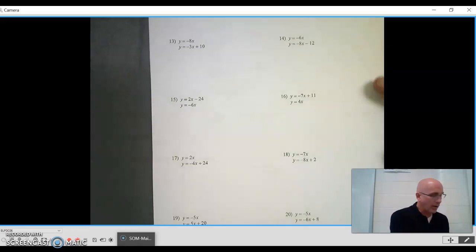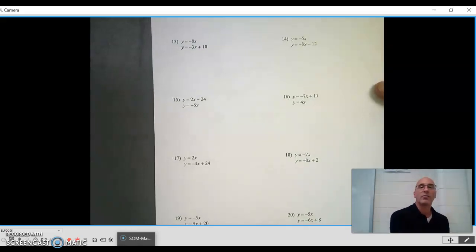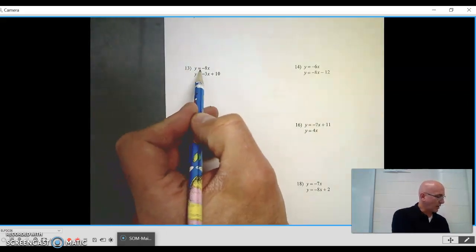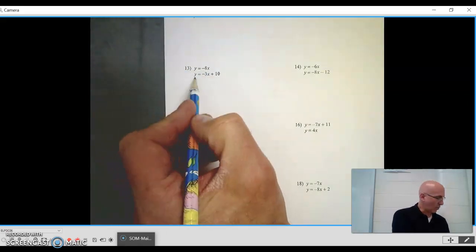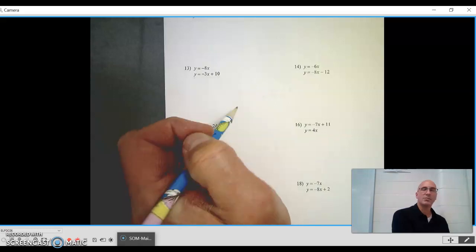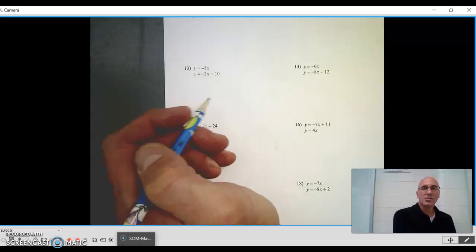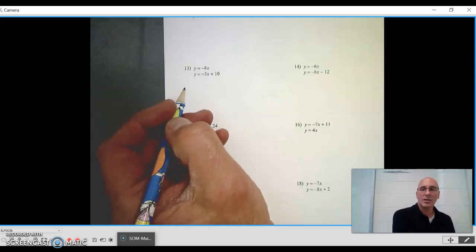Let's take one of them for an example. I'm going to take what's listed as problem 13 here: y equals negative 8x, and then y equals negative 3x plus 10. What we are going to do is substitute one equation into the other.